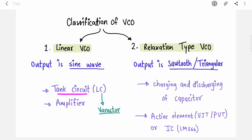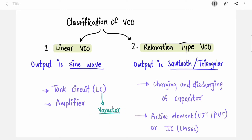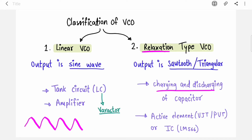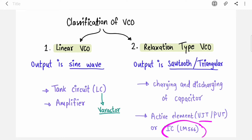In linear VCO there is a tank circuit inside it — they use a varactor diode reverse biased as a capacitor, and then there is an amplifier to boost the output. In relaxation type VCO, they control the frequency by charging and discharging of a capacitor. If the capacitor charges slowly, the frequency decreases; if it charges and discharges rapidly, the frequency increases. They use active elements like UJT, PUT, or ICs like LM566 or NE566.